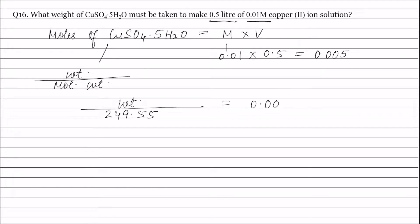Solving this equation, we get weight of CuSO4·5H2O equals 1.248 grams.